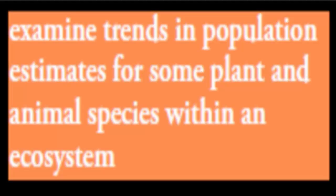Welcome to the first video of the second chapter of the Local Ecosystem Module. What I'll do in this video, I'll cover the first dot point, which says examine trends in population estimates for plants and animal species within an ecosystem. So what I have to do for this dot point is examine, which means you just have to look at the actual patterns in terms of the trends of population estimates.